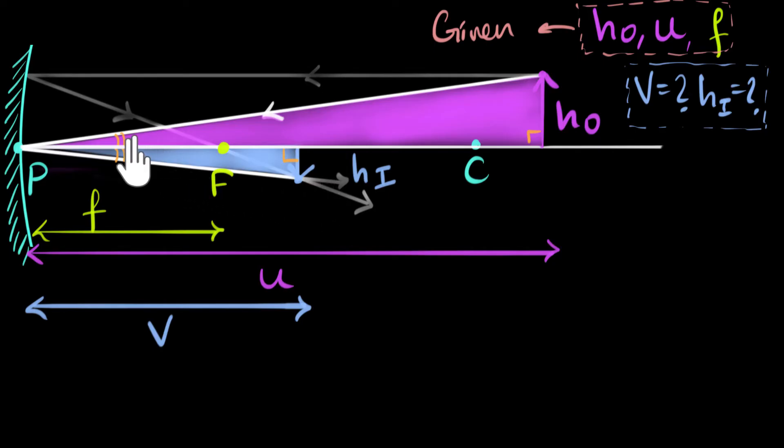The reason they are equal is because one is the angle of incidence and one is the angle of reflection. And laws of reflection tell us that they should be equal to that. Which means the other angle should also be equal, making these two triangles similar to each other.